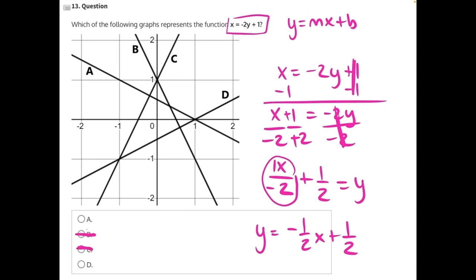Looking between a and d, a has a downward slope from left to right, which is negative, and that's what we need, and it also passes through what looks like positive 1 half, because it's right between 0 and 1. So that makes a our correct answer. Thank you.